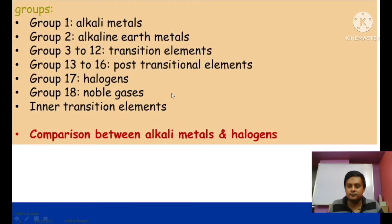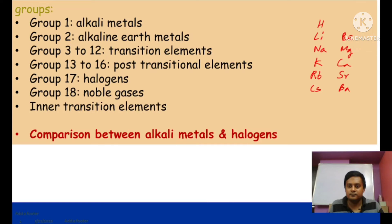Now, the groups. There are 18 groups total. Group 1 — alkali metals: hydrogen, lithium, sodium, potassium, rubidium, cesium (try to remember these). Group 2 — alkaline earth metals: beryllium, magnesium, calcium, strontium, barium (no need to remember radioactive elements, only stable ones). Groups 3 to 12 — transition elements (e.g., iron, cobalt, nickel), positioned between metals and non-metals.